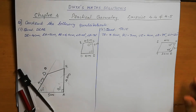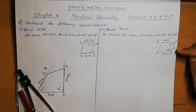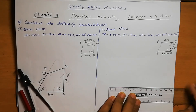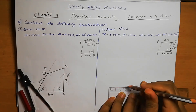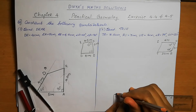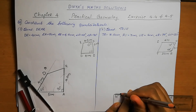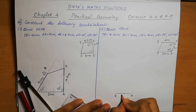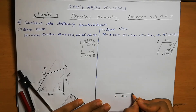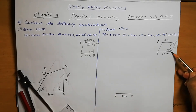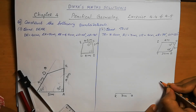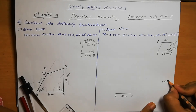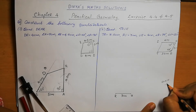Since angle R and angle U are given, we take RU as the base so we can easily mark the angles. RU is 3 cm. For angle R = 75 degrees: 75 is 60 plus 15. So 60 plus 15 equals 75 degrees.